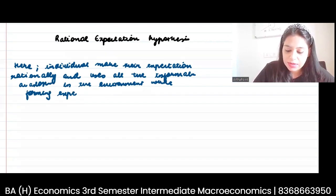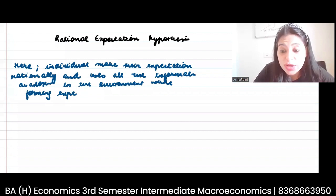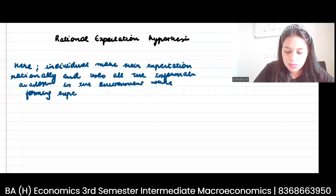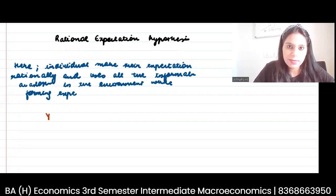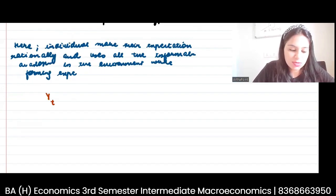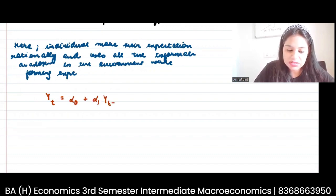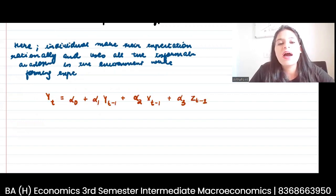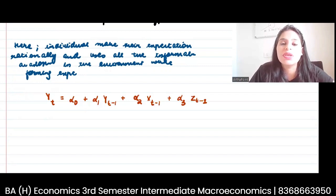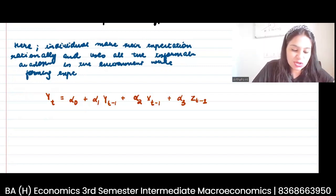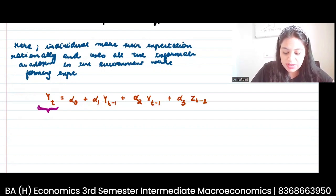Suppose I have to form an expectation about a variable today. Let's take a variable y. I have to form its expectation today. Let's say that yt = α₀ + α₁yt-1 + α₂xt-1 + α₃zt-1. I am saying: if I have to determine the price that exists in my economy today, I want to understand what would be the variable yt.